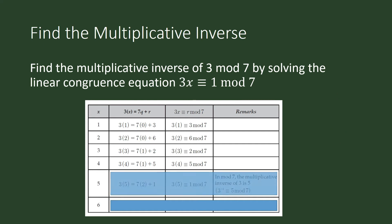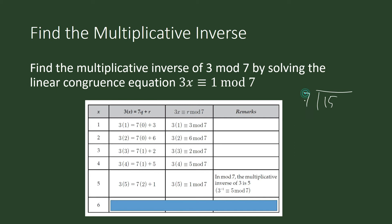Is it 5? Yes! 5 is the multiplicative inverse of 3 modulo 7. Why? Because 3 times 5 is 15, and when we divide 15 by 7, the remainder is 1 — that is what we are looking for. So 5 is the multiplicative inverse of 3 under multiplication modulo 7.